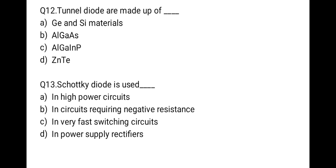The next question: tunnel diodes are made of — first germanium and silicon material, second aluminium gallium arsenide, third aluminium gallium indium phosphate, last zinc telluride. The correct option is A: germanium and silicon materials.